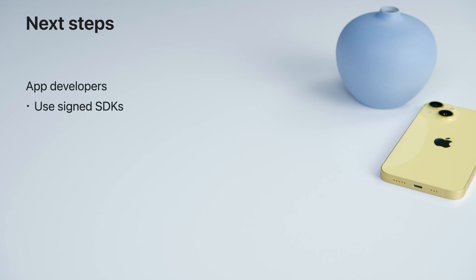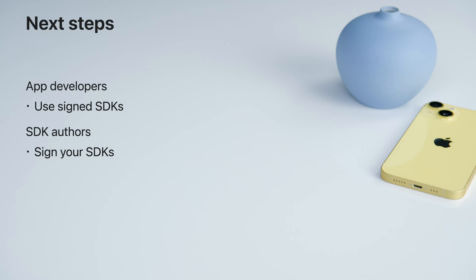For app developers, Xcode 15 will automatically help you ensure the integrity and security of your app's underlying SDKs. Making sure that all SDK signatures are verified is an important aspect of responsible app development and protecting your users. You can help by encouraging the developers in your supply chain to start signing the SDKs they publish. For SDK authors, start signing your SDKs to ensure their security and authenticity. By signing your code, you establish trust with your SDK clients, showing them that you take their security and privacy seriously. Happy app development! This is Kay, signing off.